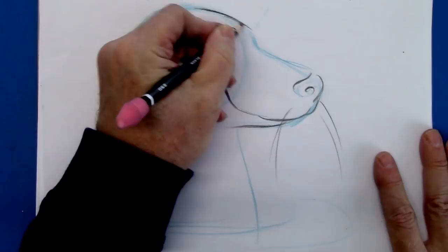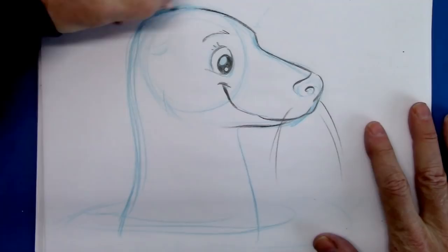And make a nice smooth transition from the forehead down to the nose, tapering.